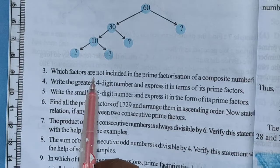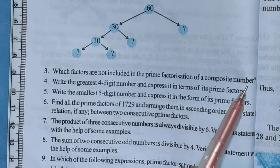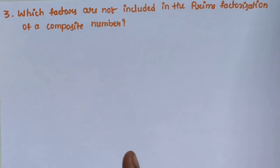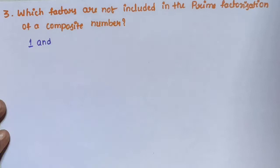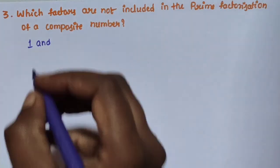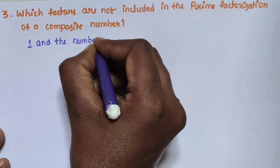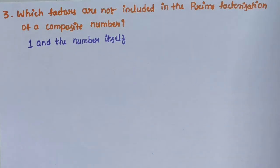Question number 3: which factors are not included in the prime factorization of a composite number? The factors 1 and the number itself are not included in the prime factorization.